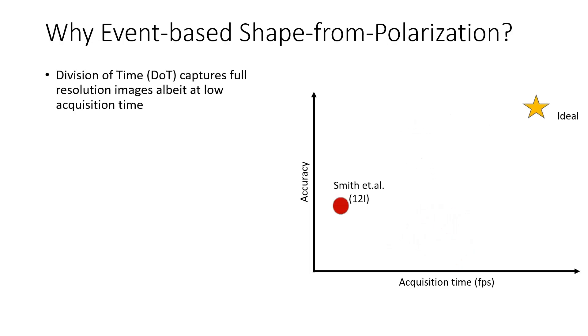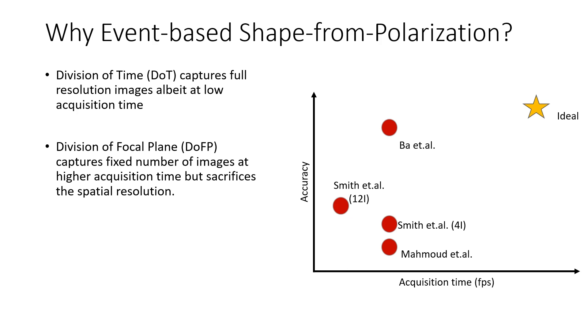Division of time captures full-resolution images, albeit at low acquisition speed. Division of focal plane captures a fixed number of images at higher acquisition speed but sacrifices the spatial resolution.